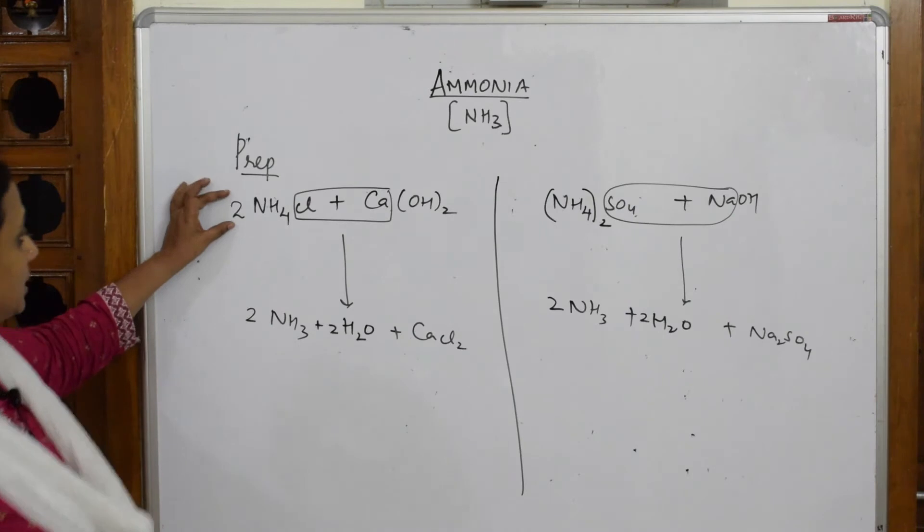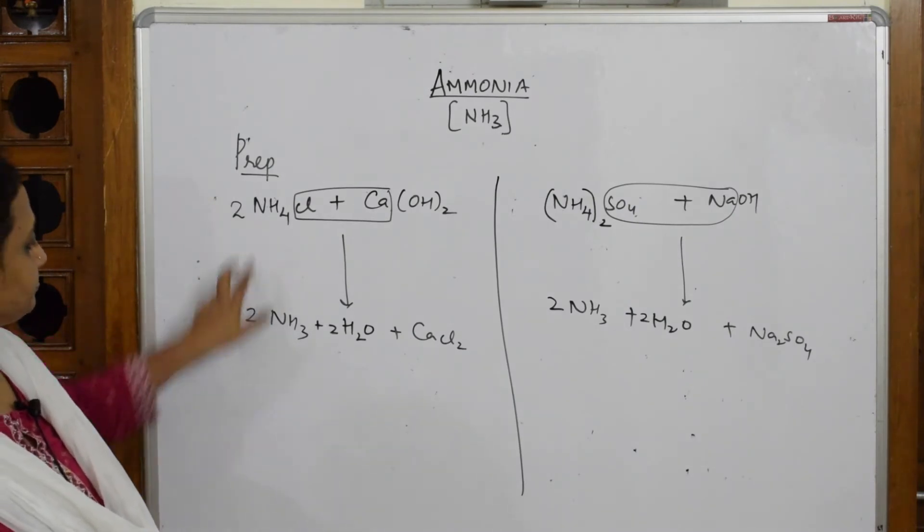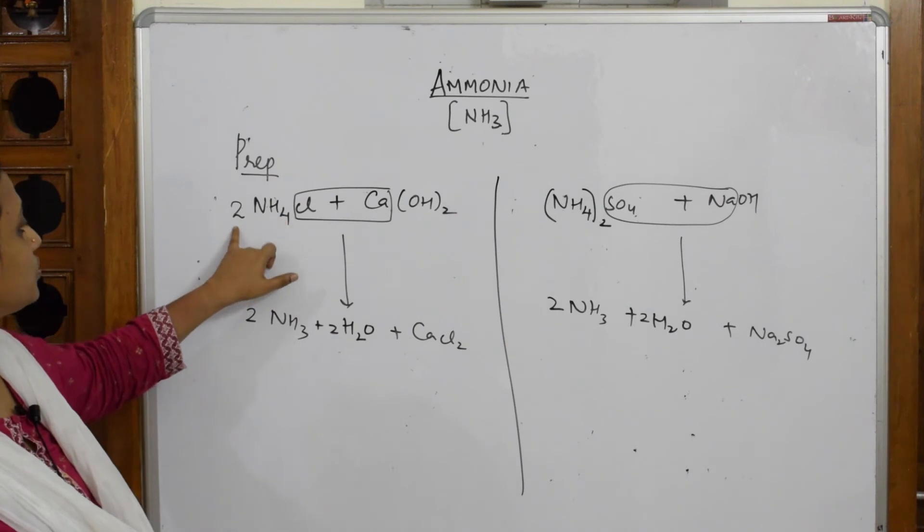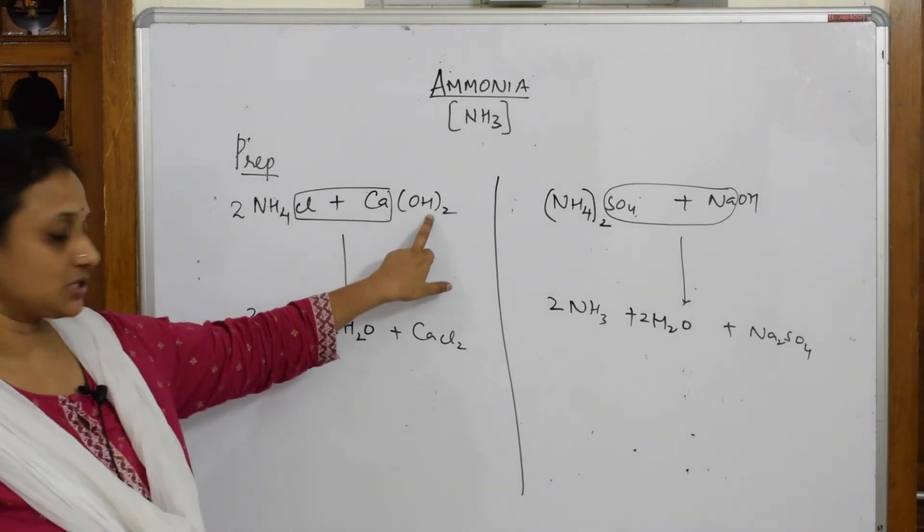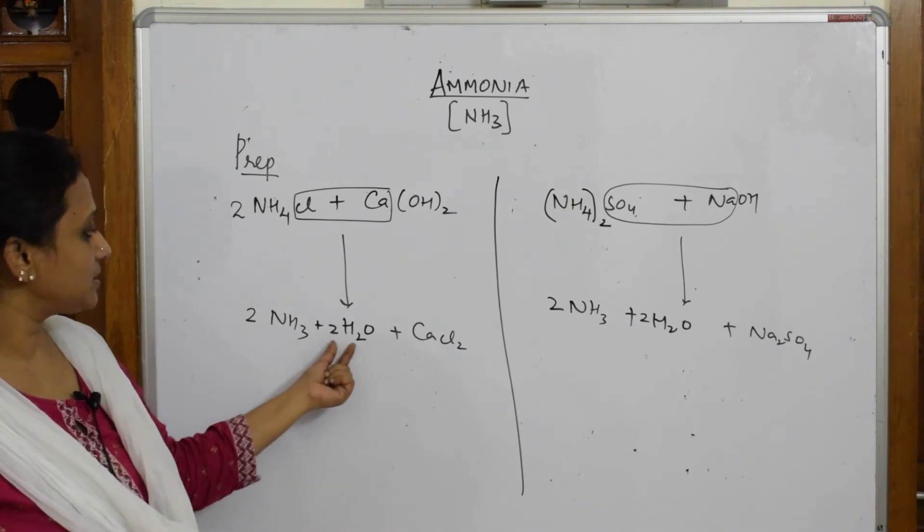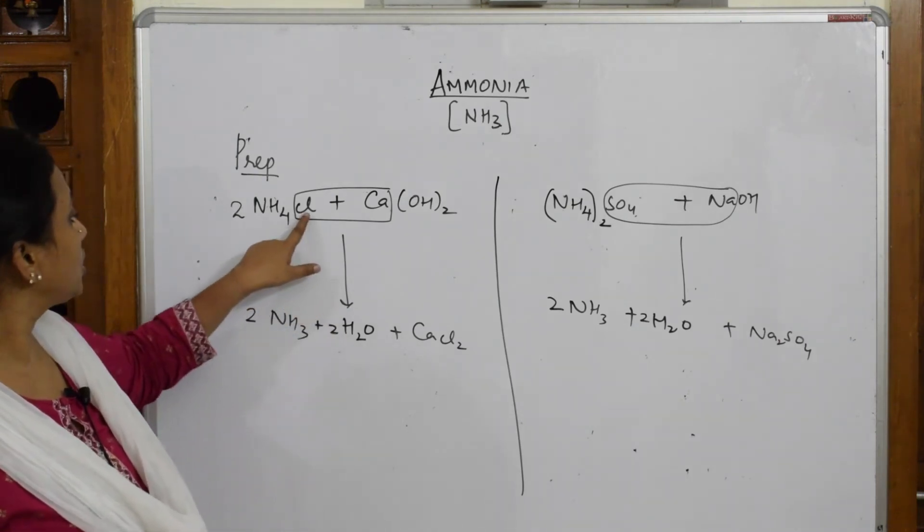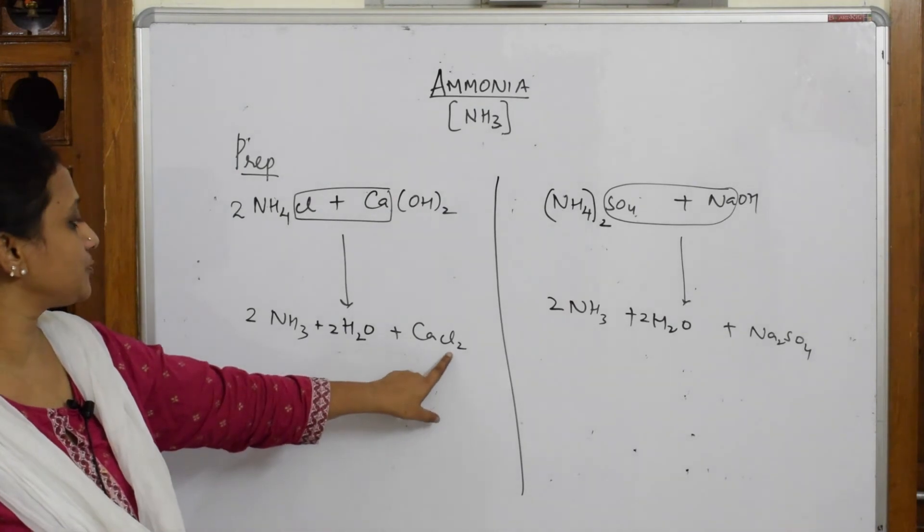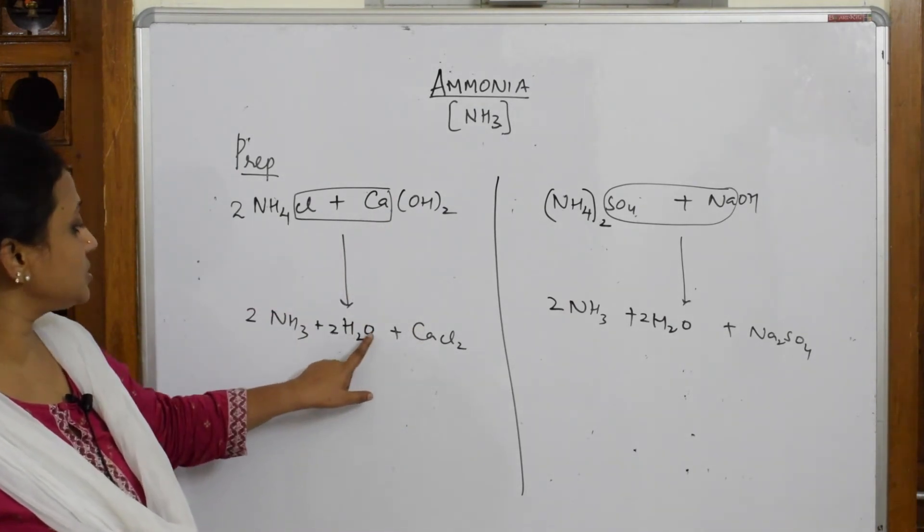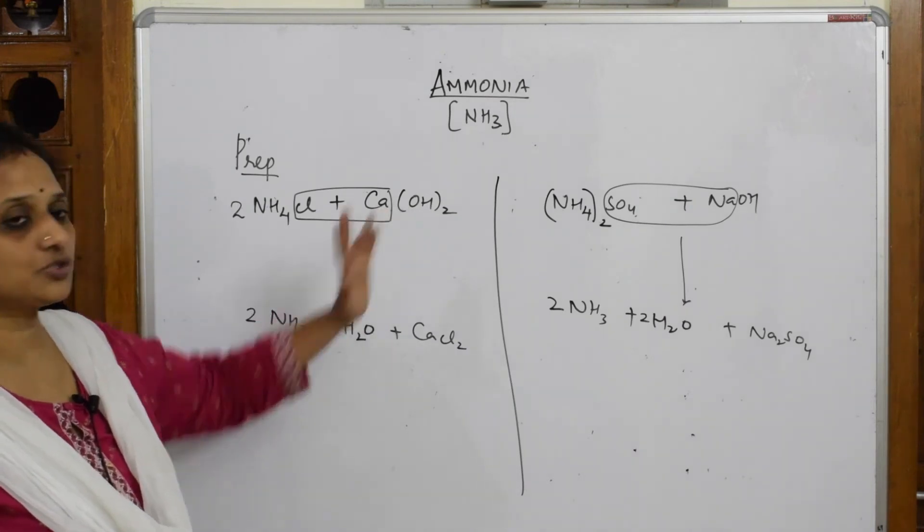Let's see whether it is balanced. Here nitrogen, if I take 2, this is also 2, balanced. Hydrogen: you have 4×2=8 plus 2=10. Here hydrogen 3×2=6 plus 4=10. Then chloride is 2, chloride is 2. Calcium is 1, calcium is 1. Oxygen is 2, oxygen is 2.